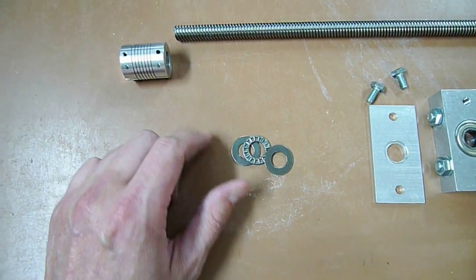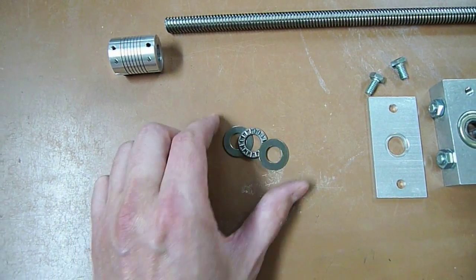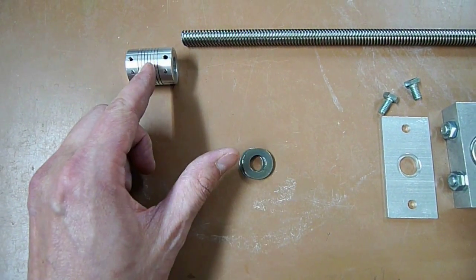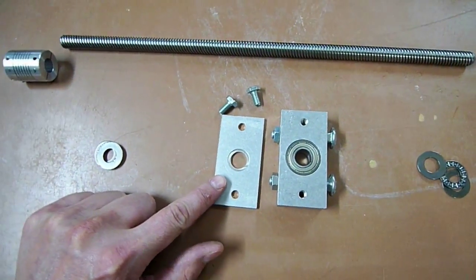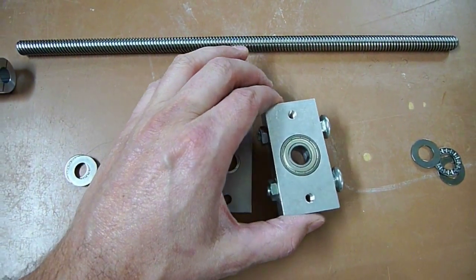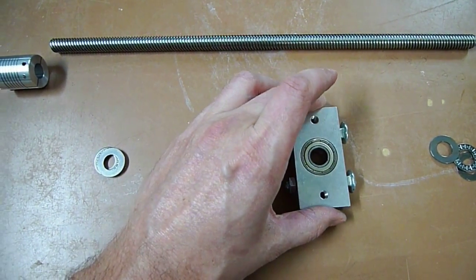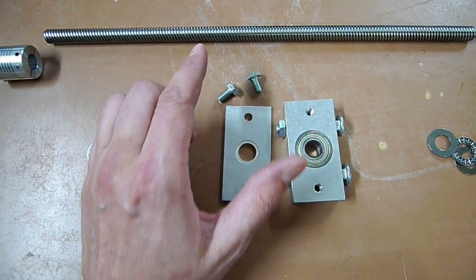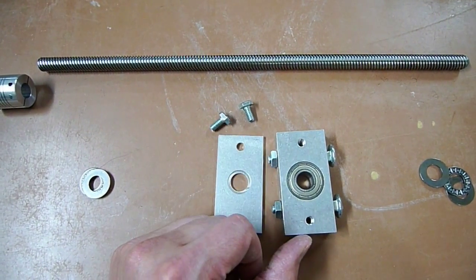Next up, which butts right against that, you have a washer, a thrust bearing, and another washer. And that just goes together as a sandwich. And this is what allows this to spin freely as it butts up against this bearing block. The bearing block is basically what it's called. It's a block that has a bearing in it. And this block attaches to the actual upright assembly that's holding the router itself and allows this to spin freely through it but keep everything from being able to move around.